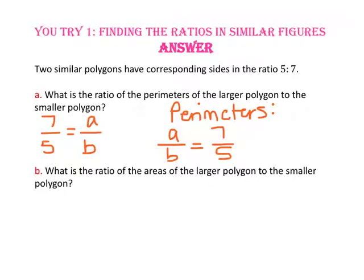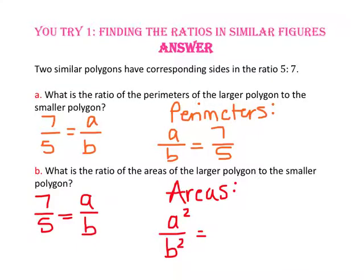For part B, what is the ratio of the areas of the larger polygon to the smaller polygon? Remember, the scale factor of the larger polygon to the smaller polygon is 7 to 5, or A to B. The ratio of the areas is A squared to B squared, or 7 squared to 5 squared. So the ratio of the areas of the larger polygon to the smaller polygon is 49 to 25.